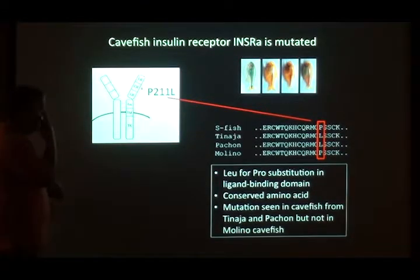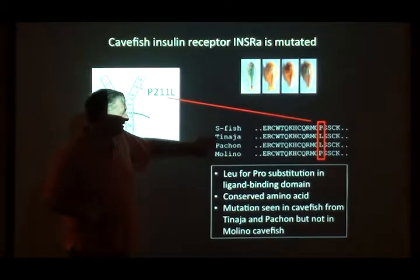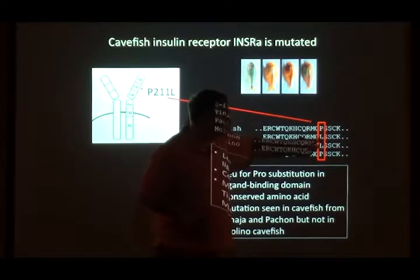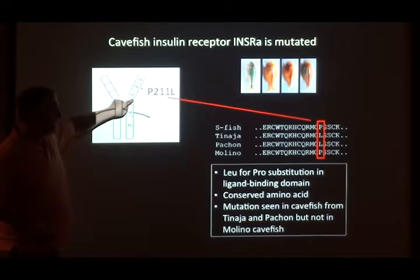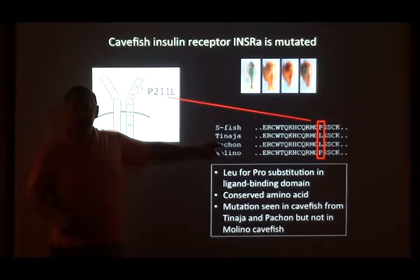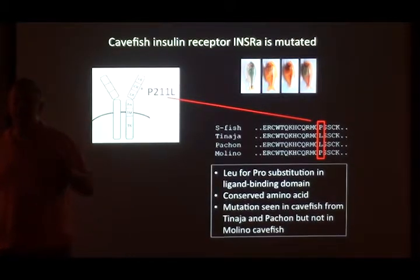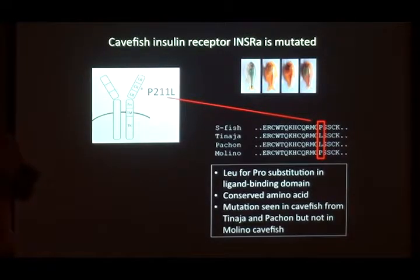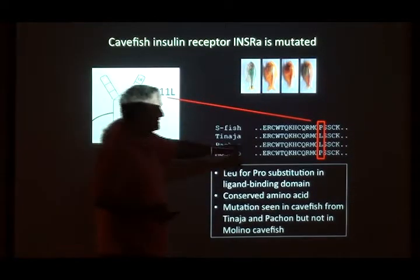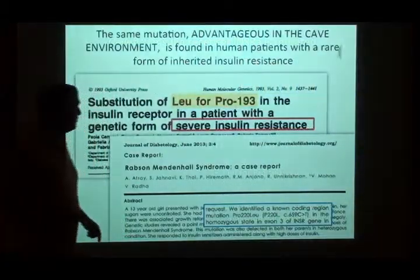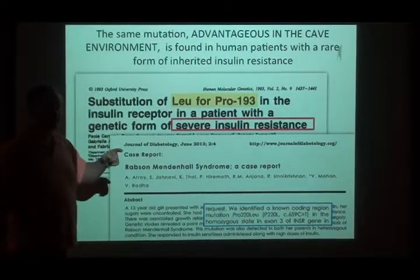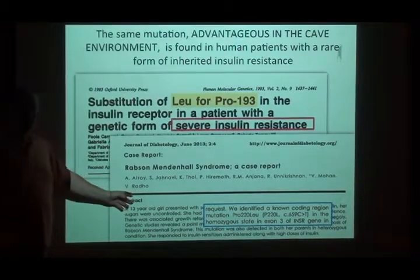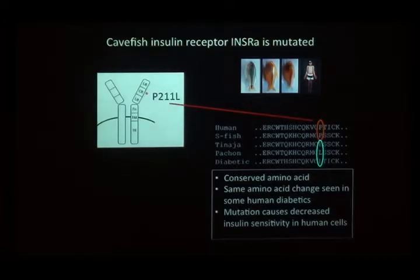This residue is highly conserved in all vertebrates except for these cave fish. And when we did a little literature reading, it was immediately obvious what was going on: that exact same proline to leucine mutation has been reported in several different families with an inherited form of severe insulin resistance in humans. So that mutation is a change in the insulin receptor that gives insulin resistance — already known in humans. We also confirmed it biochemically: the cave fish insulin receptor binds less insulin than the surface fish receptor, though it doesn't eliminate binding entirely.